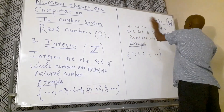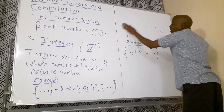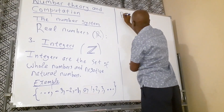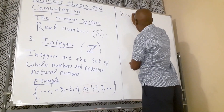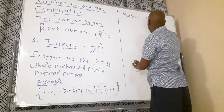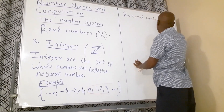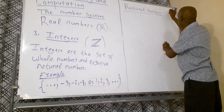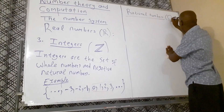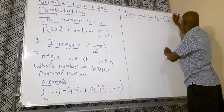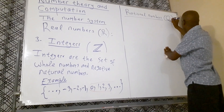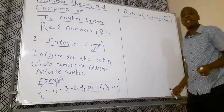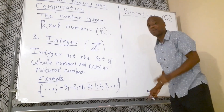The next one you need to know, which is also a real number system, is called Rational Numbers. Rational Numbers are denoted by the letter Q. A rational number is any number that can be expressed as a fraction.